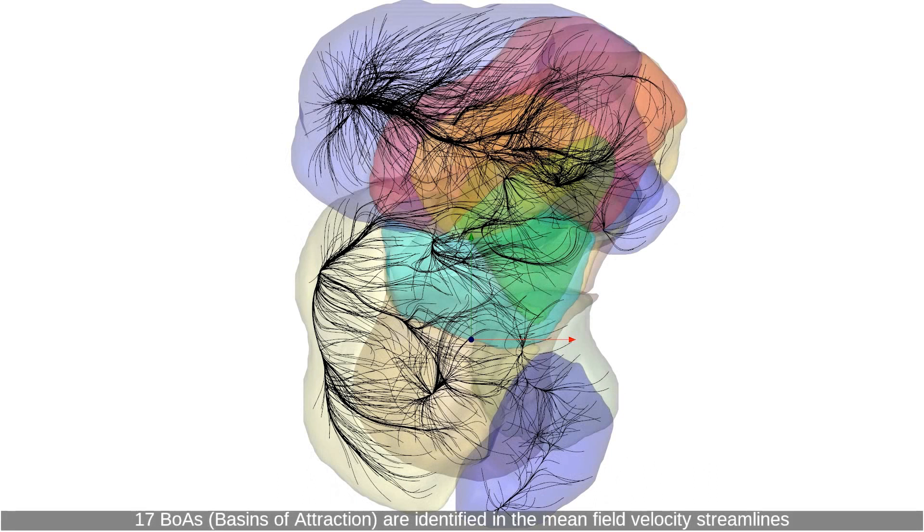17 BOAs, basins of attraction, are identified in the mean field velocity streamlines.